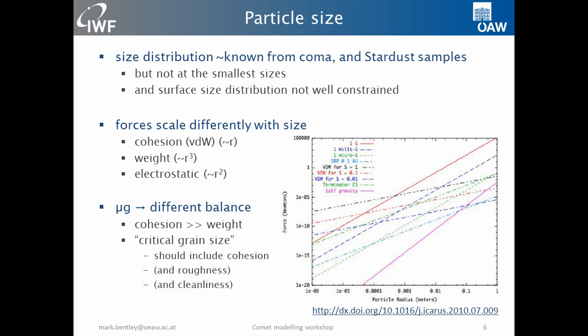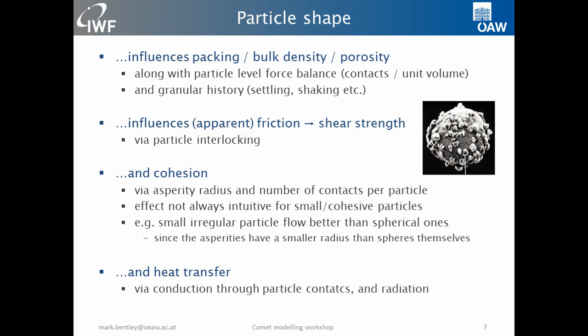This means, for example, that you cannot use the idea of a critical grain size between the balance of the drag force and the weight and centrifugal acceleration unless you really consider the cohesive forces, which dominate the weight of the particle by orders of magnitude, potentially, for even centimeter-sized particles. There are lots of other fine-scale parameters, for example roughness. The shape is kind of hard to categorize in detail, but we know that shape is going to affect how particles pack together and how we get bulk porosity.